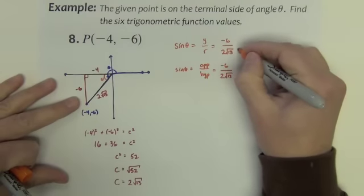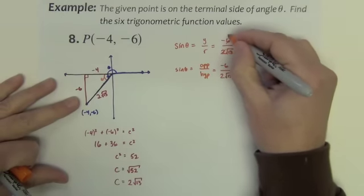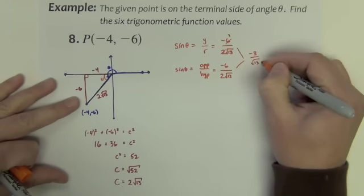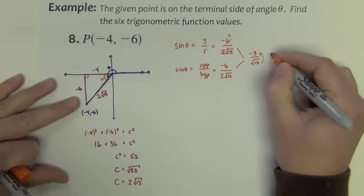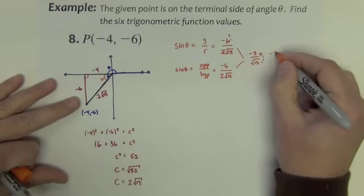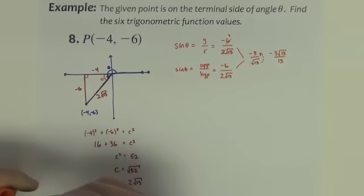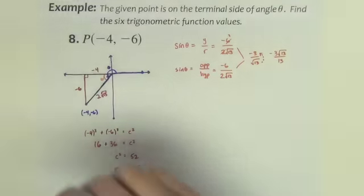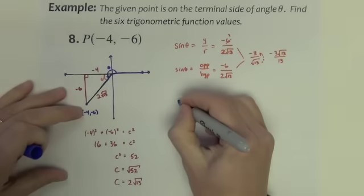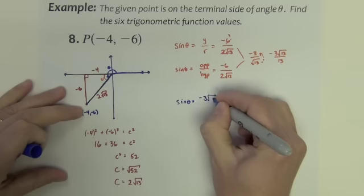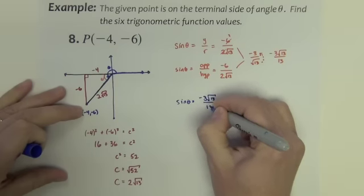Now if I were simplifying these, I would reduce and make it maybe negative 3 over square root of 13. I'd bring that up. So I'd get negative 3 square root of 13 over 13. So we've got sine theta is negative 3 square root of 13 over 13.